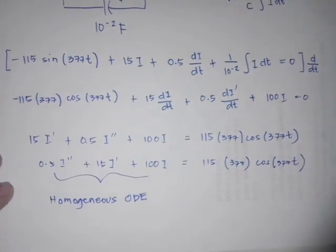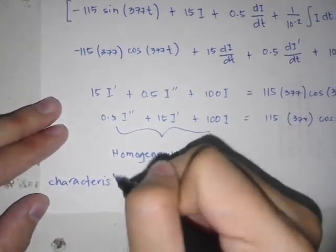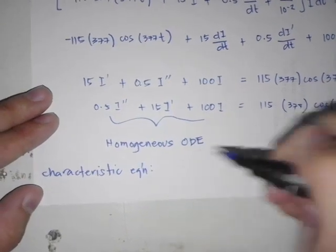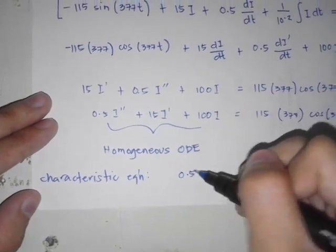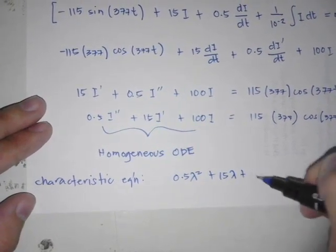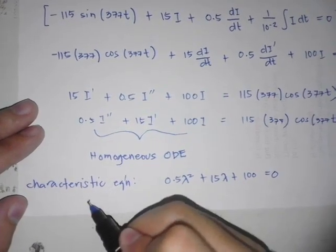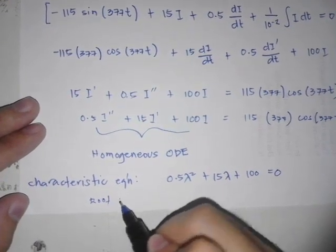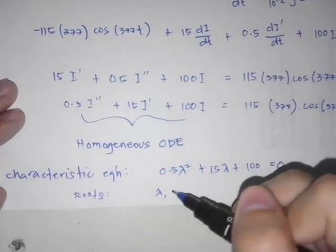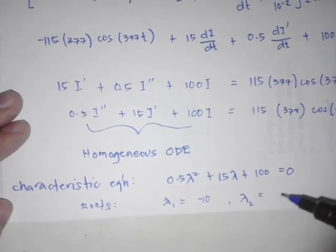Now the characteristic equation will be 0.5r² plus 15r plus 100 equals 0. Solving this, the first root will be negative 10 and the second will be negative 20.